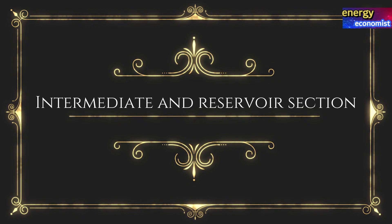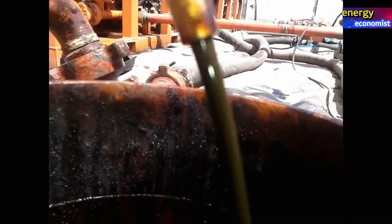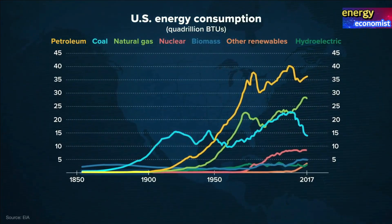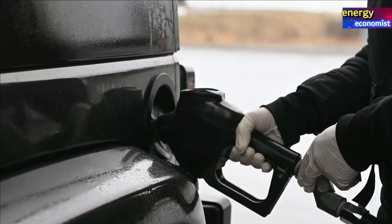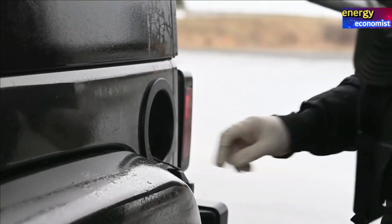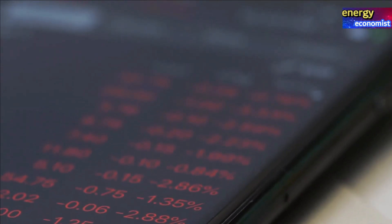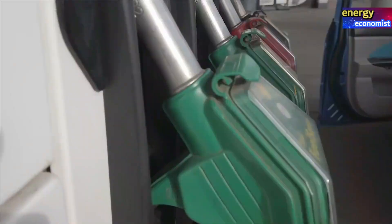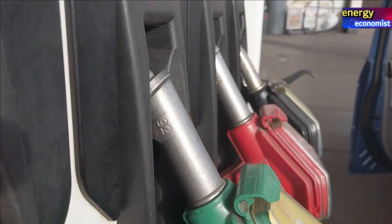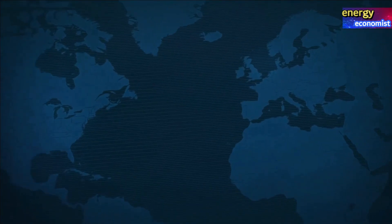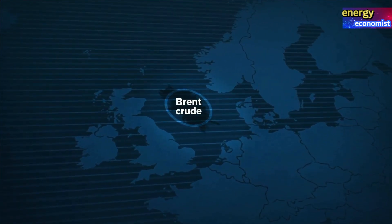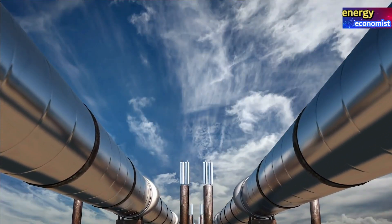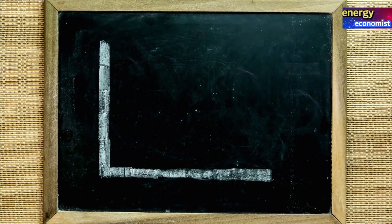Between the top hole and the reservoir section, in most cases an intermediate section will need to be drilled. This section consists of more consolidated rocks than the top hole. The deviation angle is often increased significantly in this interval to reach the subsurface target, and lateral departures from the surface coordinates may reach several kilometers. Based on pore pressure prediction from seismic or measured data from offset wells, the mud weight has to be determined. The pressure exerted by the mud column has to exceed the formation pressure in order to maintain overbalance and prevent the hole from collapsing, but has to be lower than the fracture pressure of the formation.